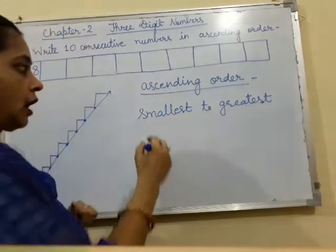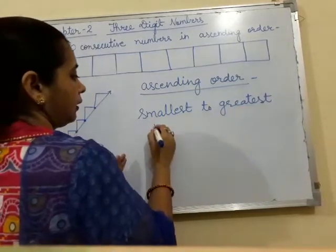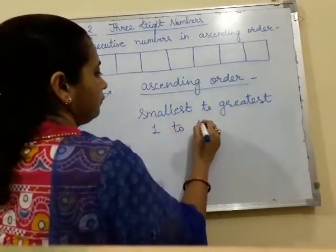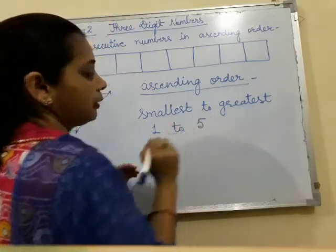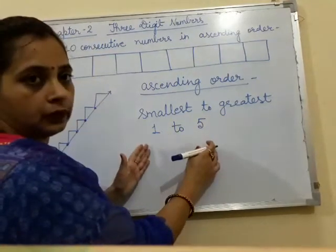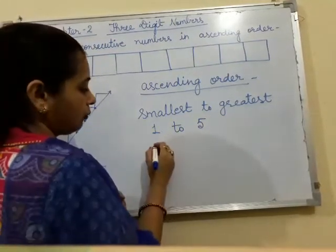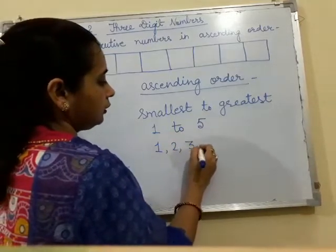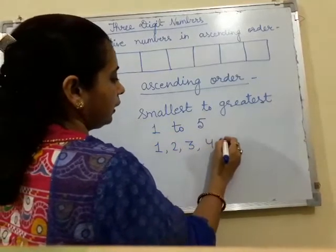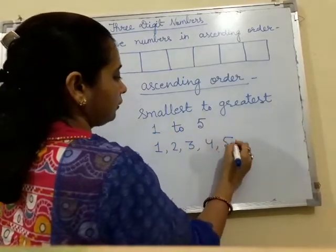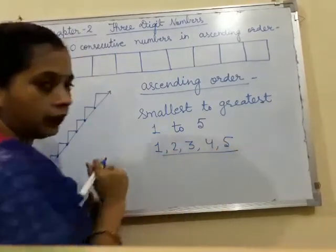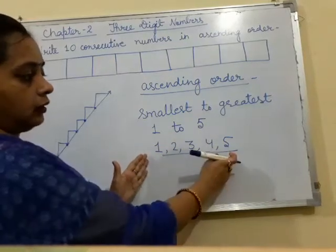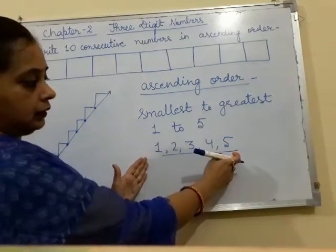जैसे कि अगर हमारे पास 1, 2, 5 number को ascending order में लिखना है, तो हम कैसे लिखते हैं? 1, 2, 3, 4, and 5. इस तरह से हमने ascending order में लिख दिया.